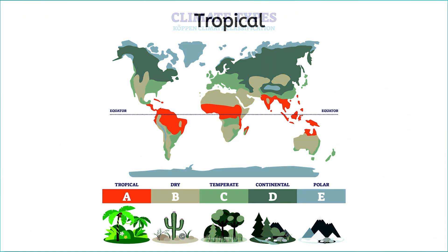Let's start with tropical climates, which are often found near the equator. These locations are warm year-round and get a lot of rain. Think of rainforests like the Amazon. If I lived here, my closet would have short sleeves and rain gear, but not a winter coat or snow boots.